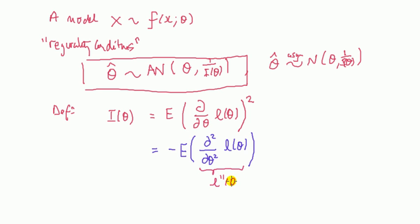To make things look a bit neater, let's say the second derivative is L double dash of theta. Notice I've done curly D, not straight D, but forget what I just said. So these two are the definition, and the information number, but for calculation purposes we want to use this one.